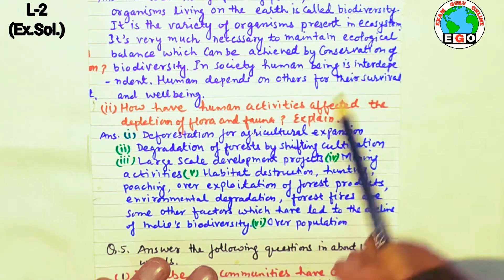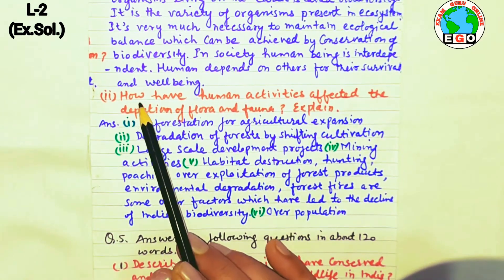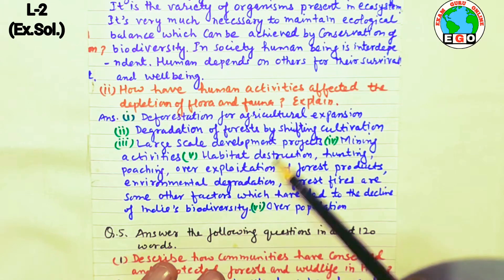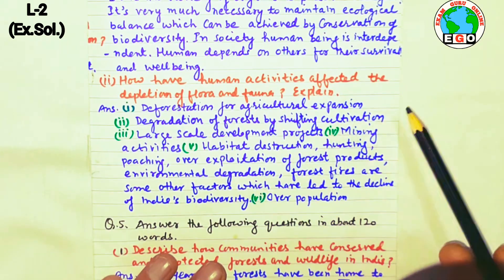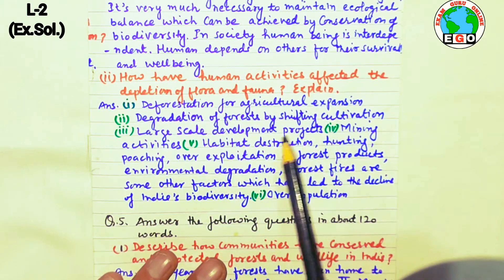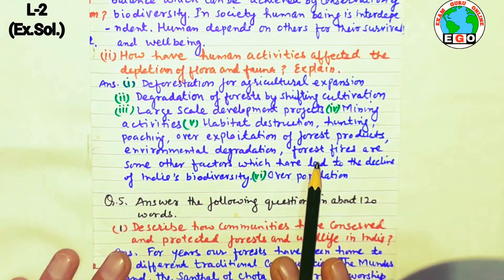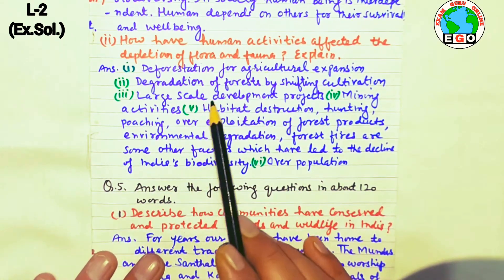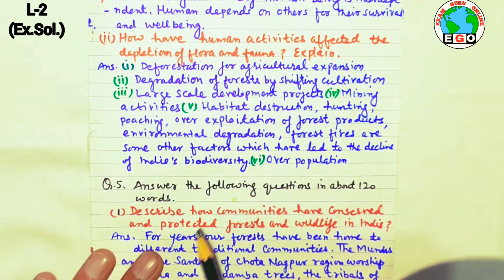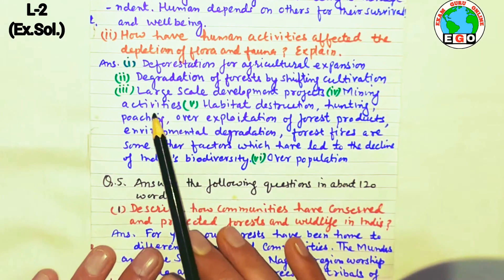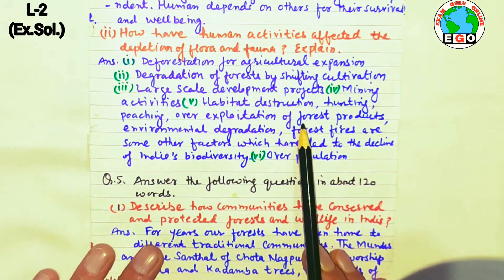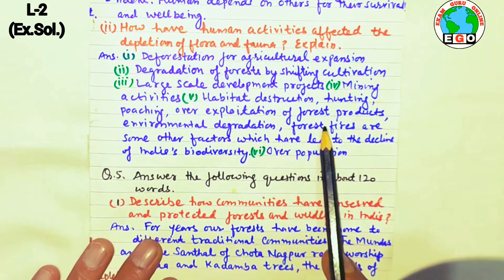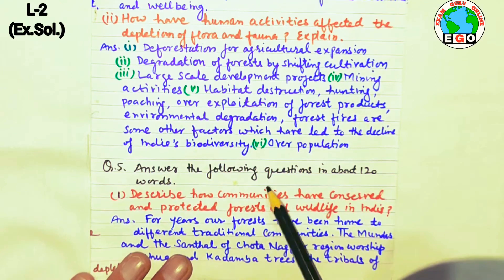Next question: how have human activities affected the depletion of flora and fauna? As the human population grew, the need for agriculture increased, leading to cutting of trees. Degradation of forests by shifting agriculture, large-scale development projects, dams, and mining also contributed. Additionally, habitat destruction, hunting, poaching, and exploitation of forest products have damaged the environment.